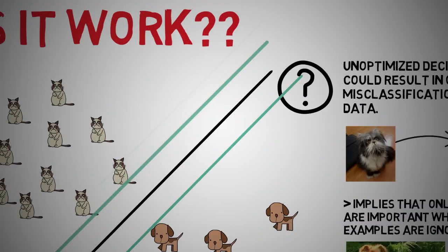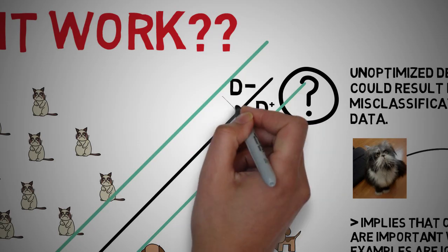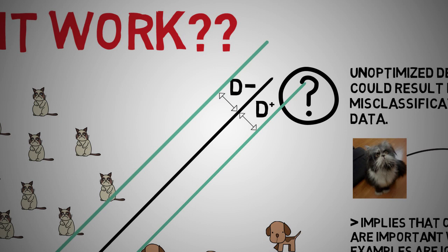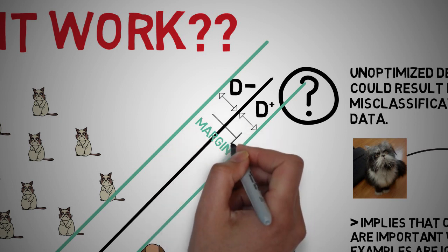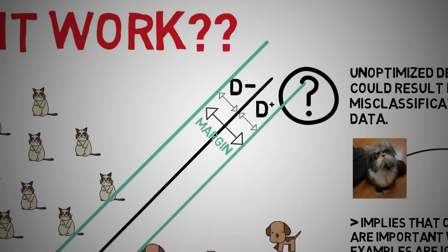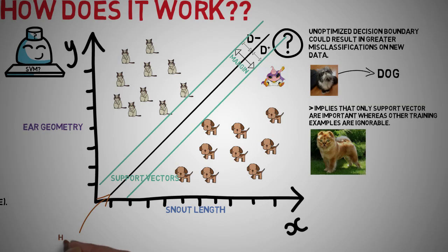So we have d plus, which is the shortest distance to the closest positive point, and d minus, which is the shortest distance to the closest negative point. And then we have the margin of a separating hyperplane, which is d positive plus d negative.